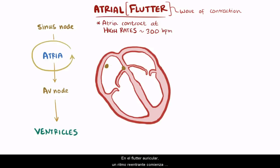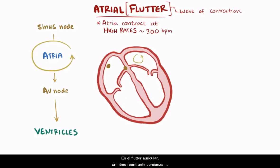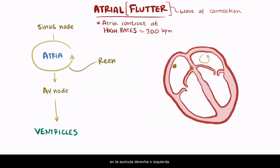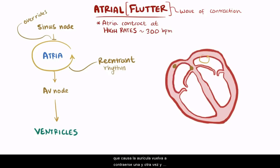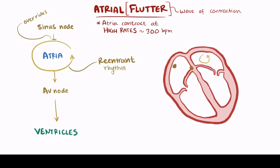With atrial flutter, a reentrant rhythm starts in either the right or the left atrium. Reentrant signals loop back on themselves, overriding the sinus node and setting up an endless cycle that causes the atria to contract again and again at really fast rates.